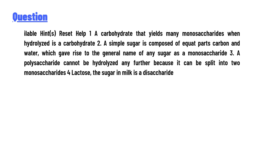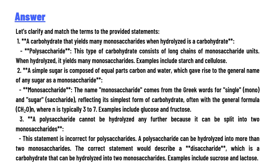Let's clarify and match the terms to the provided statements. Number one: a carbohydrate that yields many monosaccharides when hydrolyzed is a polysaccharide. This type of carbohydrate consists of long chains of monosaccharides, and when hydrolyzed it yields many monosaccharides. Examples include starch and cellulose.